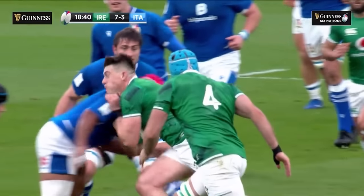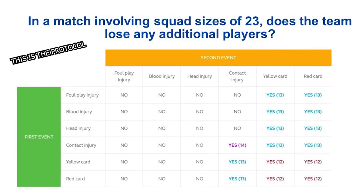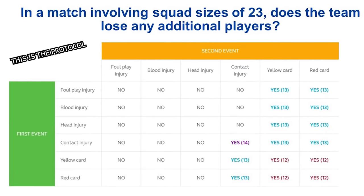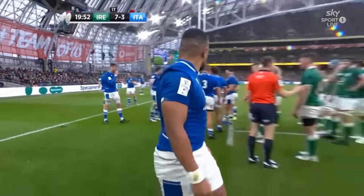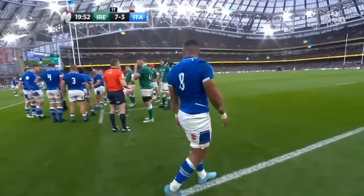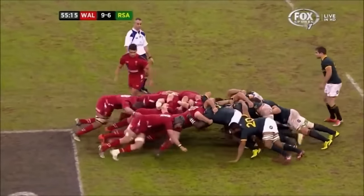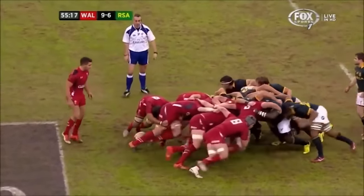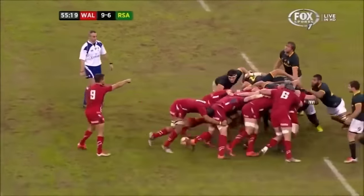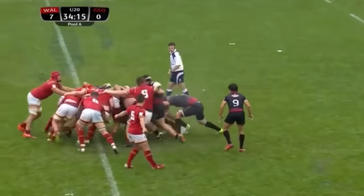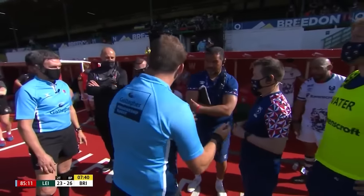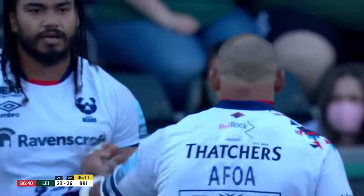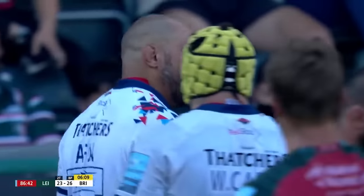If the actions that led to uncontested scrums involved a card, or both players left the field for what's deemed a contact injury, the side must lose an extra player. This was seen in the Ireland versus Italy game in the 2022 Six Nations. This rule exists to stop teams abusing the system — if a replacement were allowed, a team being dominated at the scrum could take off their front rows for an injury and remove a weapon from the other team with no consequences. Bristol Bears boss Pat Lam tried this against Leicester in 2021, before quickly finding a suitable replacement upon learning he would lose a player.